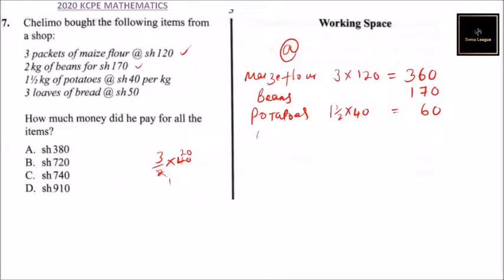Then loaves: he bought three, and one was costing 50 shillings, so it is three multiplied by 50, and that should give you 150.